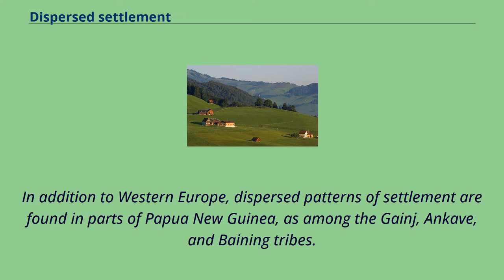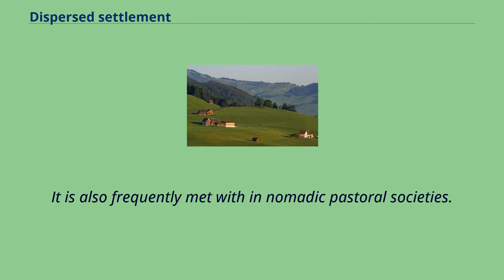In addition to Western Europe, dispersed patterns of settlement are found in parts of Papua New Guinea, as among the Gange, Ancave, and Baining tribes. It is also frequently met within nomadic pastoral societies.